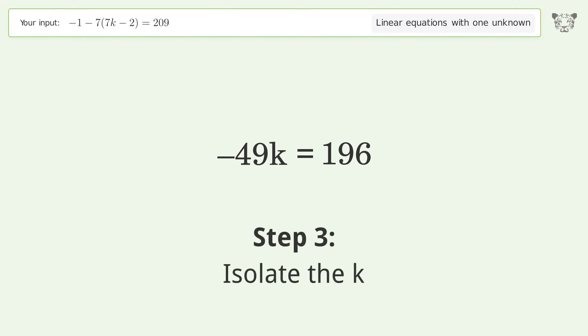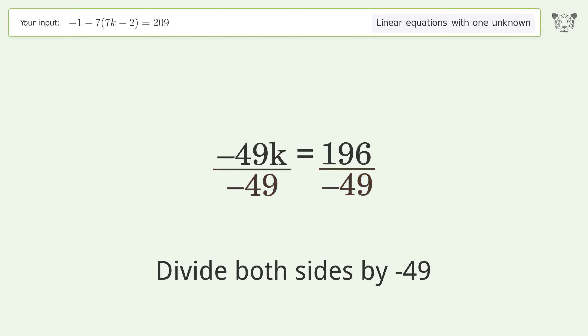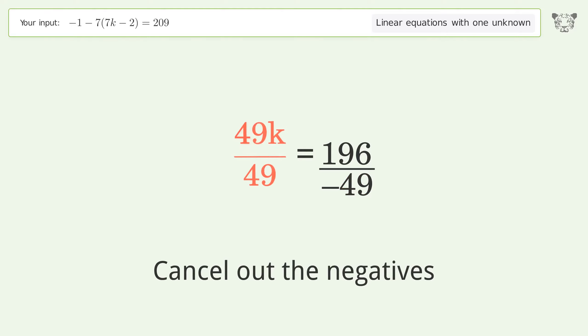Isolate the k. Divide both sides by negative 49. Cancel out the negatives. Simplify the fraction.